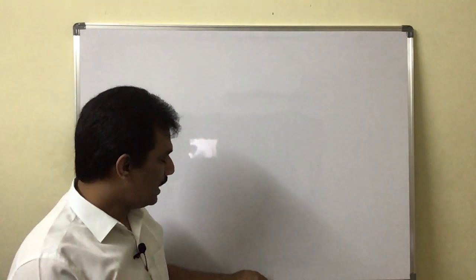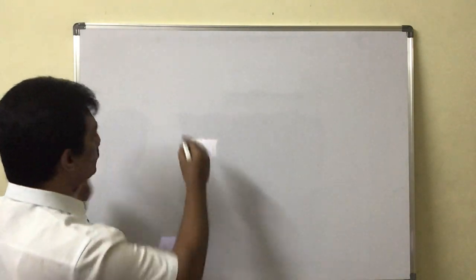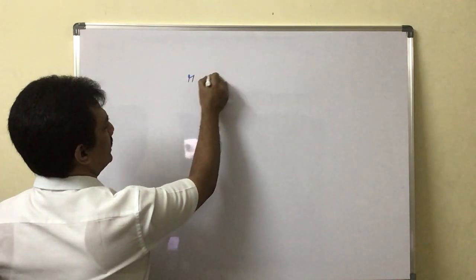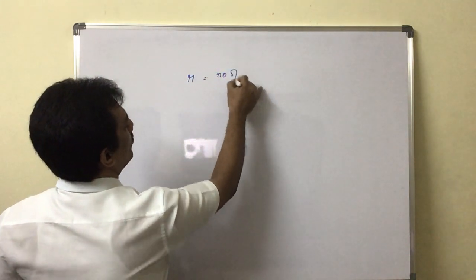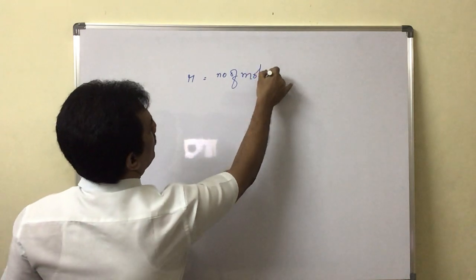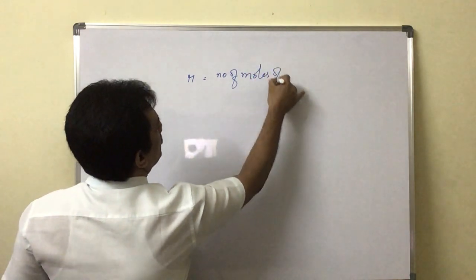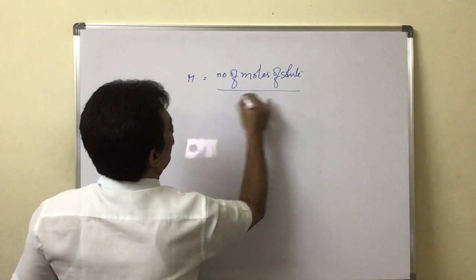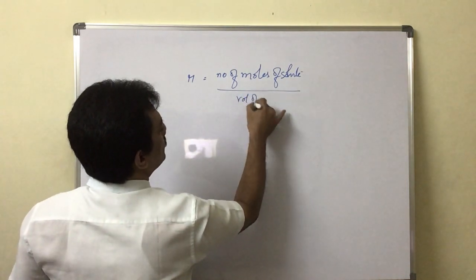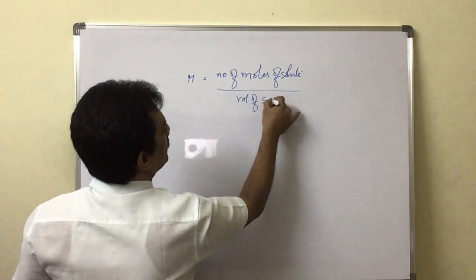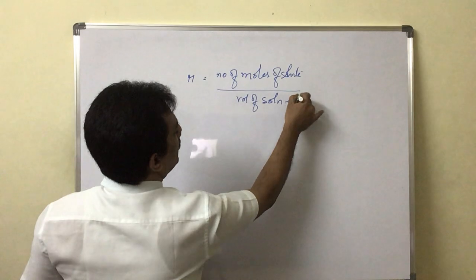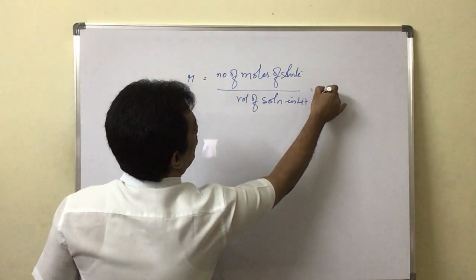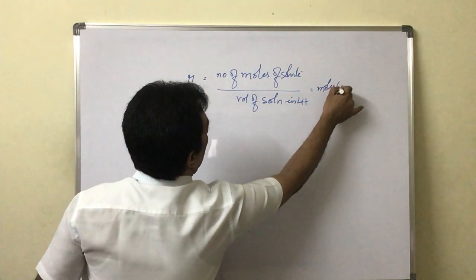If we recall molarity — what is molarity? Molarity M is nothing but the number of moles of solute divided by the volume of solution in liters. Simply, it is moles per liter.